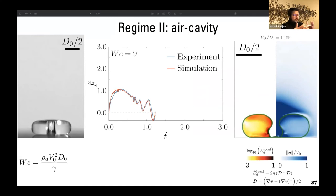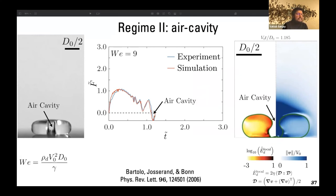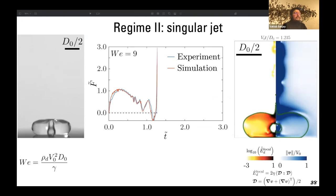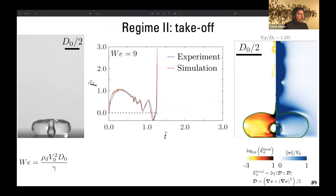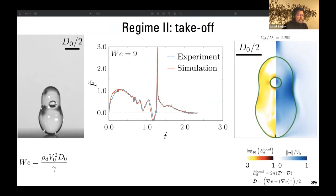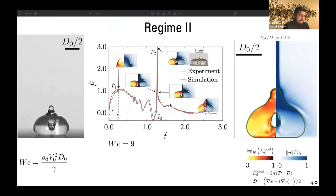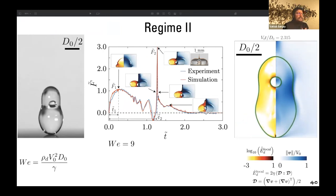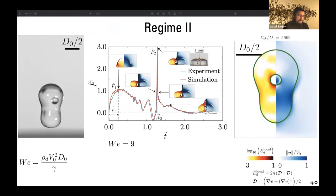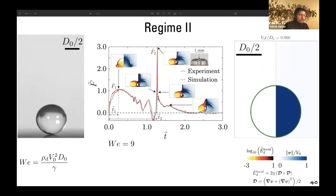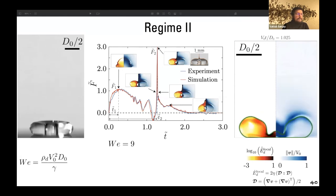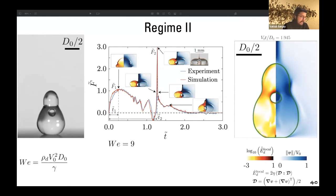There is flow focusing due to capillary waves which creates an air cavity, reminiscent of bursting bubbles where capillary waves converge and focus to form a singular jet. When the singular jet forms there is a sudden rise in force which is higher than even the first peak — that is F₂. This high peak essentially happens because of the converging of capillary waves at the axis of symmetry, which you can also appreciate by looking at the dissipation magnitudes, which are very high at that instant.